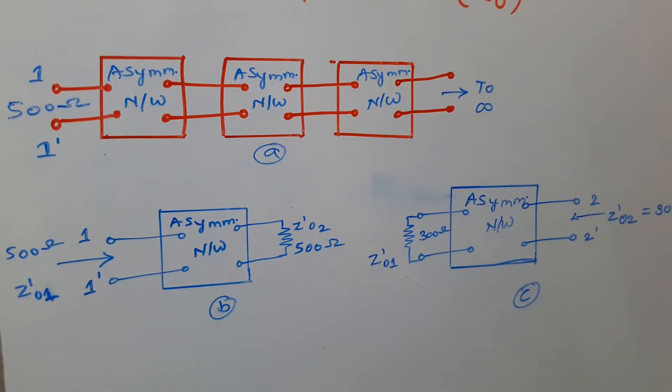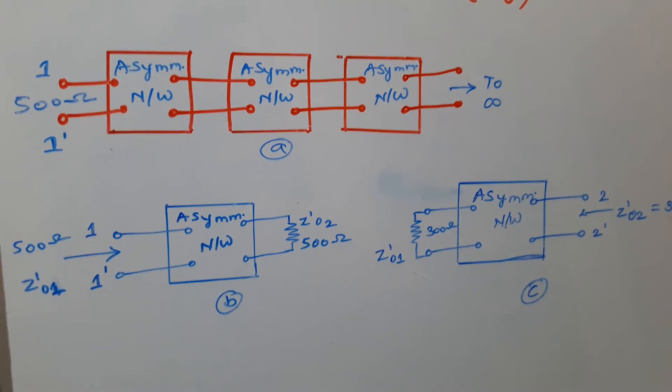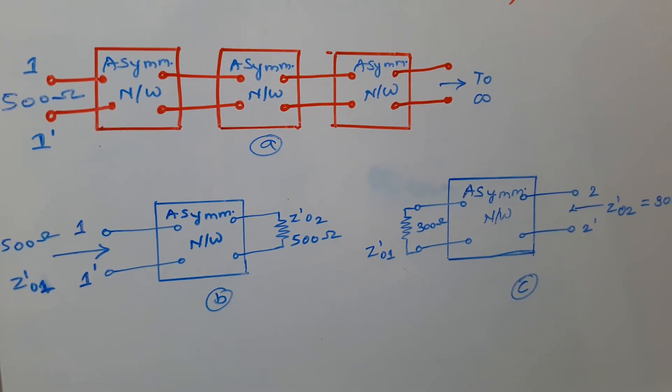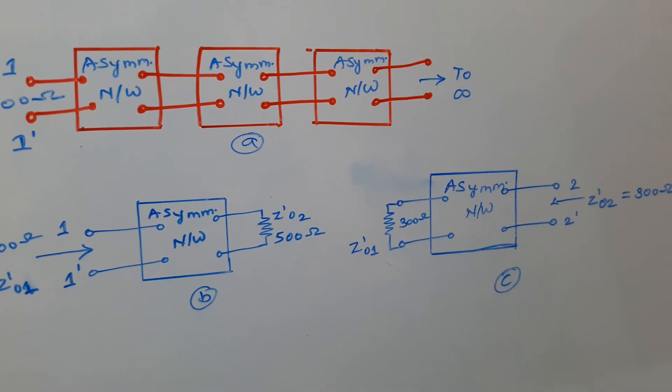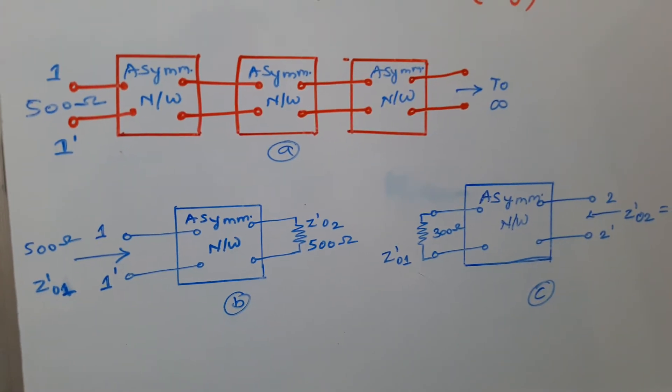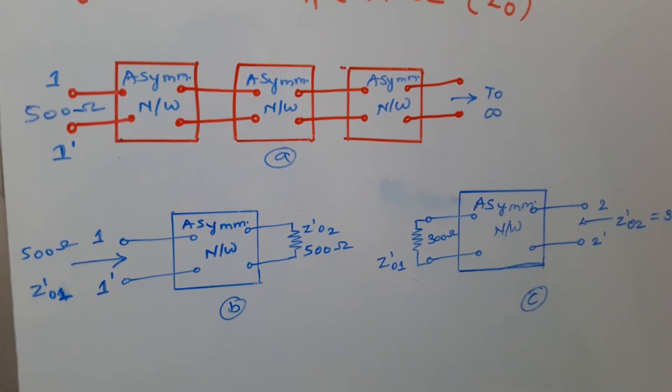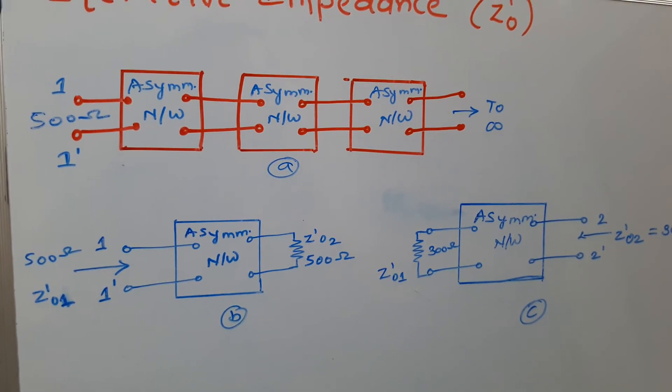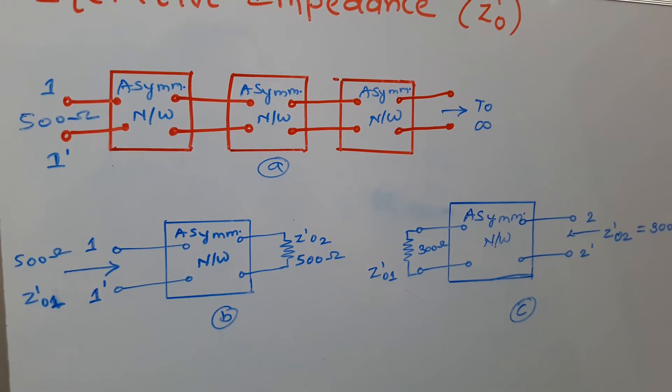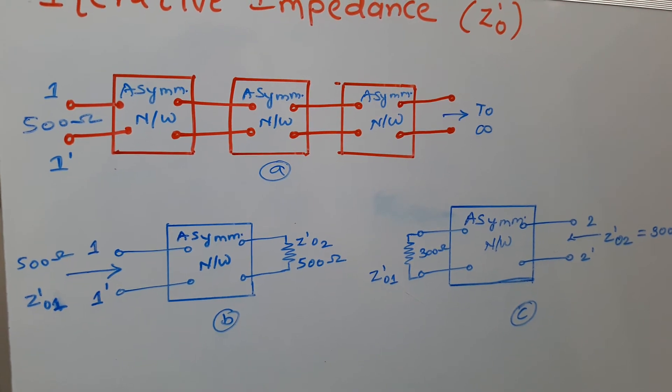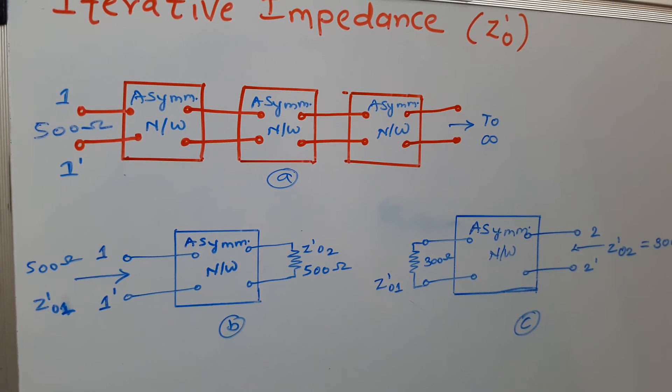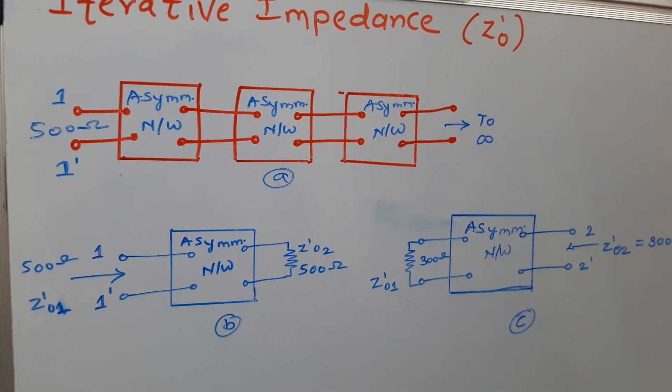The iterative impedance measured at different pairs of terminals of asymmetrical network are different. For example, the iterative impedance measured at terminal 11' is 500 ohms, whereas if we connect 300 ohms at the output port, then impedance at the 11' will also be 300 ohms.